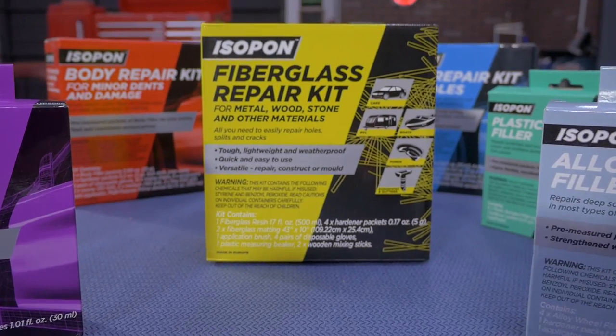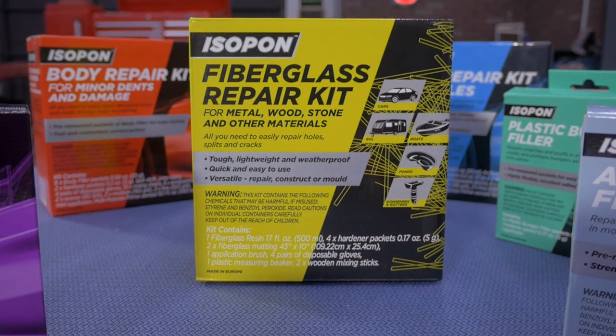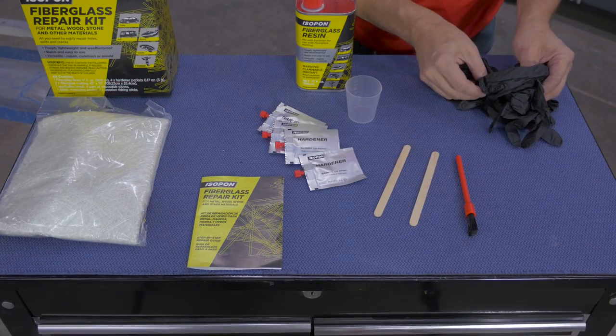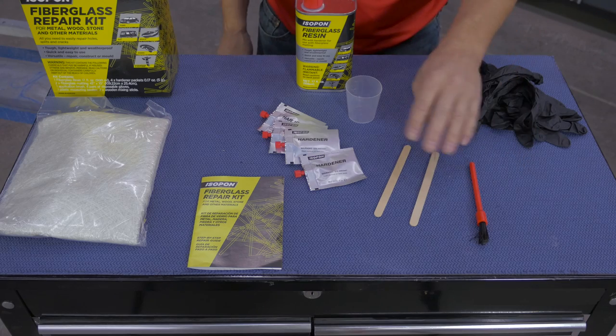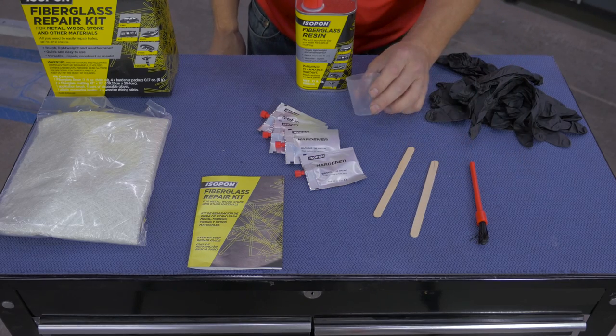So let's take a look at what comes in the box of the fiberglass repair kit. You'll find several pairs of protective gloves, a resin application brush, mixing sticks, and a mixing cup.